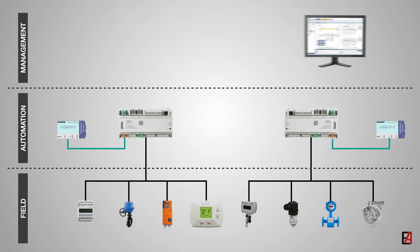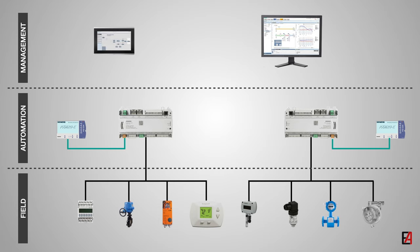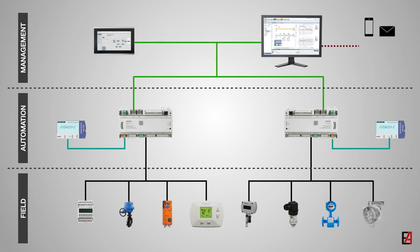Next is the management level. The management level provides an interactive user interface to the building operator. It displays all the information taken from the field level by the controllers in a graphical user interface format. The management level can either be a PC or an HMI — human machine interface. The management level can also send data via text or email message in case of any critical alarms. The field level sensors and devices are connected to the automation level via hardware connections, typically with single pair cables. The operator terminals can be connected either via a bus cable or a standard Ethernet cable. The automation level is connected to the management level via BACnet IP protocol with the use of building structured cable networks.